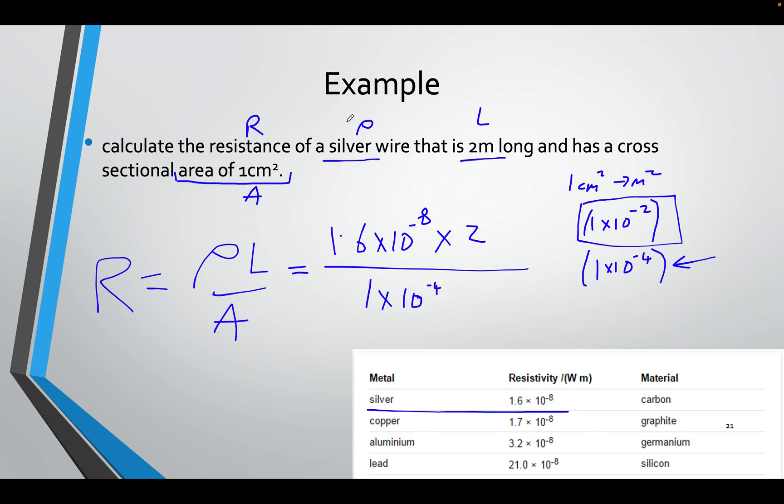Here's an example. Find the resistance of a silver wire, 2 metres long. This is the cross-sectional area. So we have the area. So what we do is R equals ρL over A. Rho, silver. Let's check silver. This will be given to you. You find the resistivity, 1.6 times 10 to the minus 8. For rho, I will put that here, 1.6.